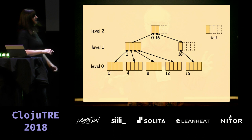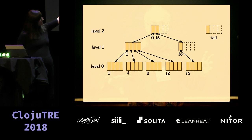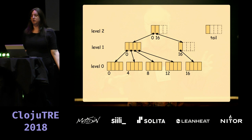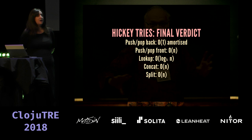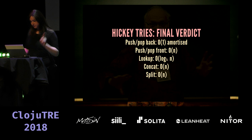In Clojure's actual implementation there's an optimization. Clojure keeps the final node in a separate tail node that you don't have to walk down the tree to find. Until the tail is full, it doesn't go in the tree at all. When it's full, it's appended as the last node and a new tail is created. This means push to end is actually O(1) amortized with O(log N) worst case — which is very acceptable.